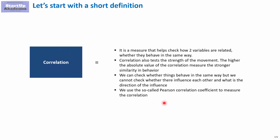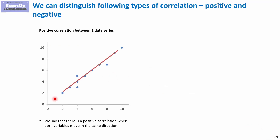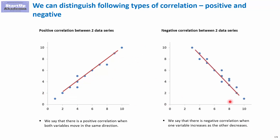To measure the correlation, we use the so-called Pearson correlation coefficient, which can range from minus one to one. Correlation can be positive, meaning two variables behave in the same manner, or it can be negative, where one is going down when the other one is going up.